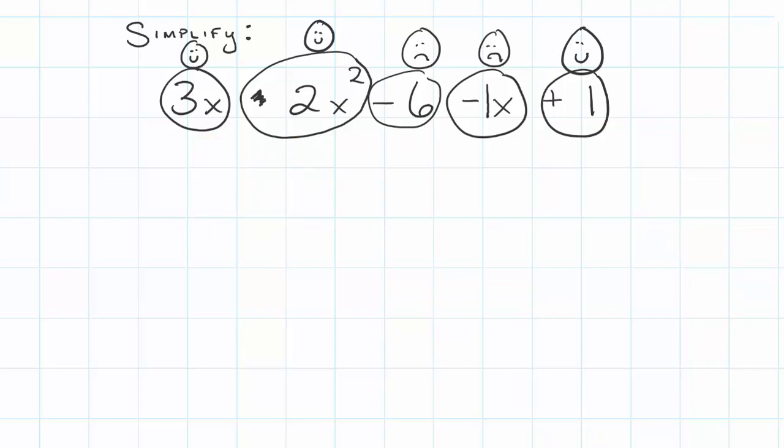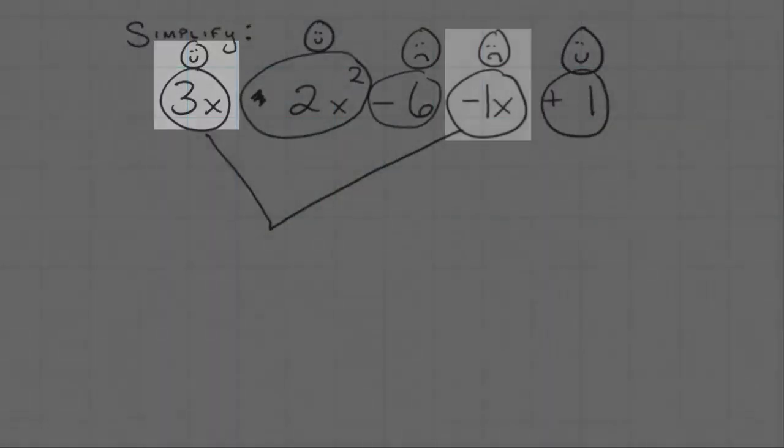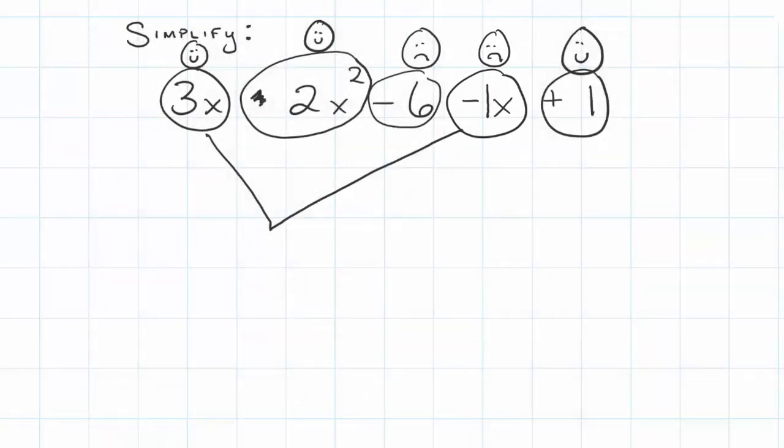Remember 3x is just to kind of jog our memory if we broke this apart would be three separate x's. I'm going to put together my 3x and my negative 1x. I have more positives than I do negatives. I have two more positive x's than negative x's, so I have two positive x's.